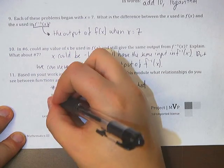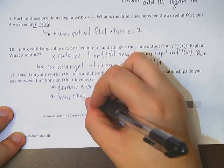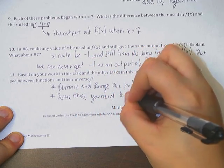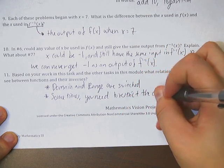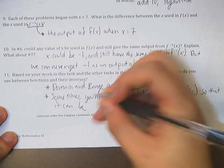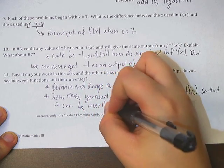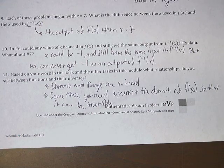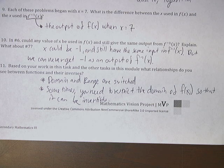Okay. Based on your work in this task and the other tasks in this module, what relationships do you see between functions and their inverses? The major things that you need to know, the domain and range are switched. And, sometimes, you need to restrict the domain of f of x so that it can be invertible. Okay. We saw this, I think, in 1.2. So, this is kind of harkening back to something that we've already talked about.